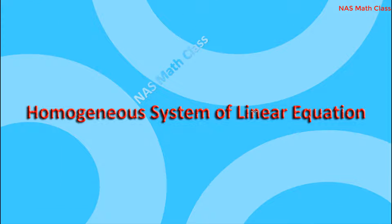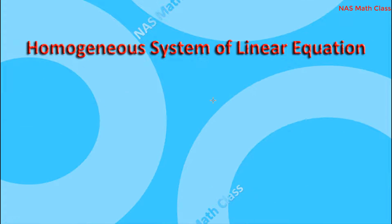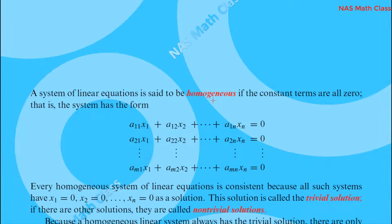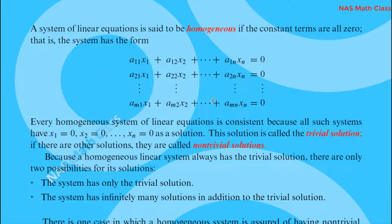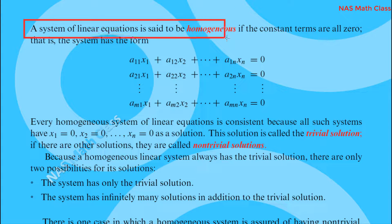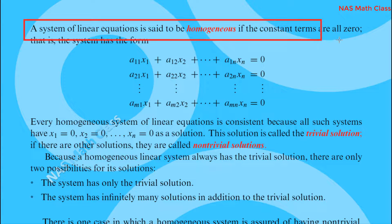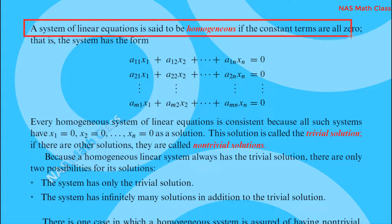A homogeneous system of linear equations is said to be homogeneous if the constant terms are all zero.